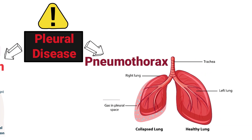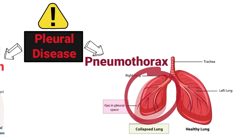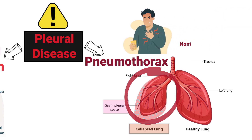A pneumothorax is a respiratory condition that occurs when air leaks into the pleural space of the thoracic region, resulting in a collapsed lung. When an air leak occurs, it alters the pressure that keeps the lungs inflated, which results in a collapse. A pneumothorax can result from an open injury to the chest wall or from a non-traumatic event in which the cause is unknown.